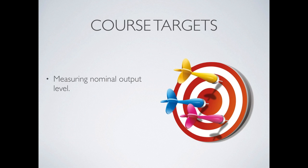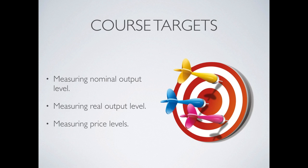The first target is to learn how to measure output in nominal terms, which means its dollar value. The second is to measure the output activities, which means the real output level. And the third is to measure price level. There are various kinds of price levels that we are going to track.